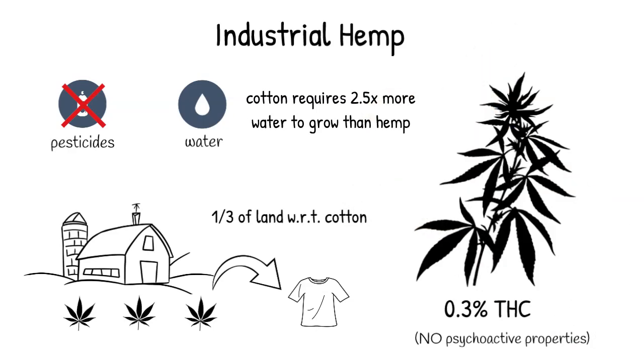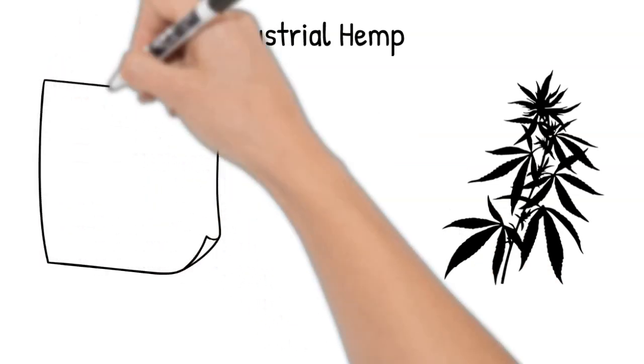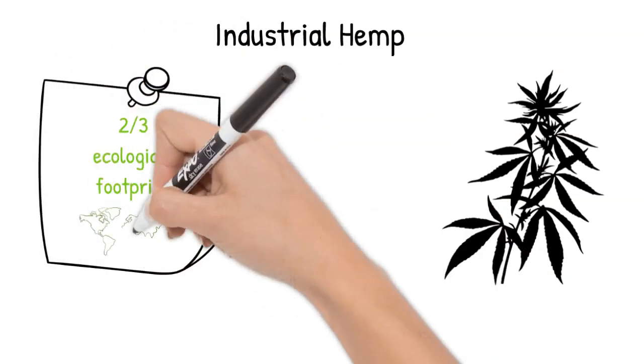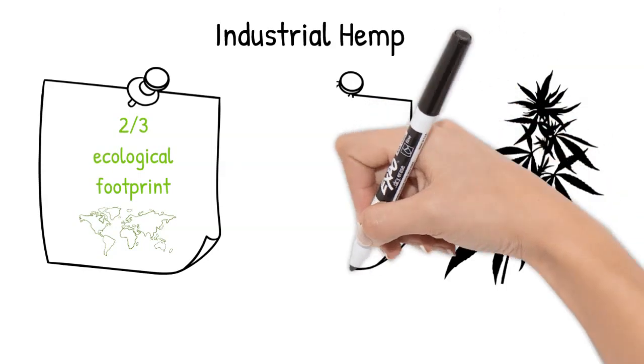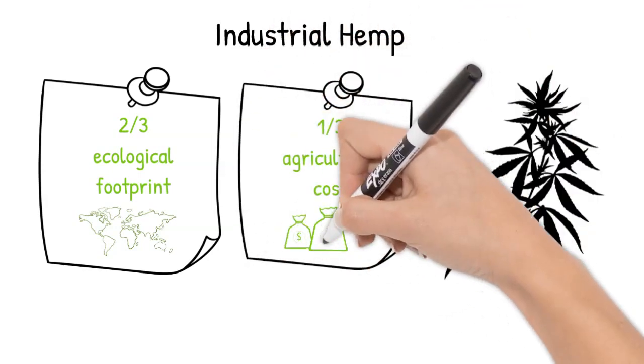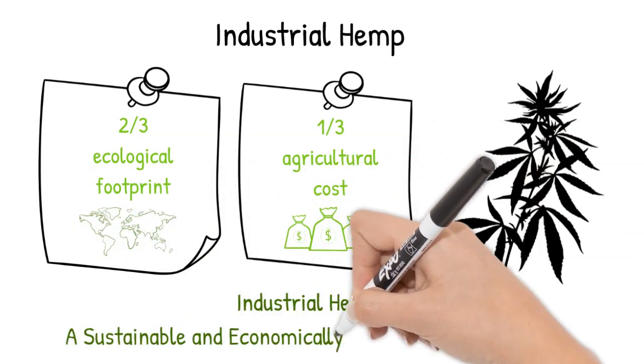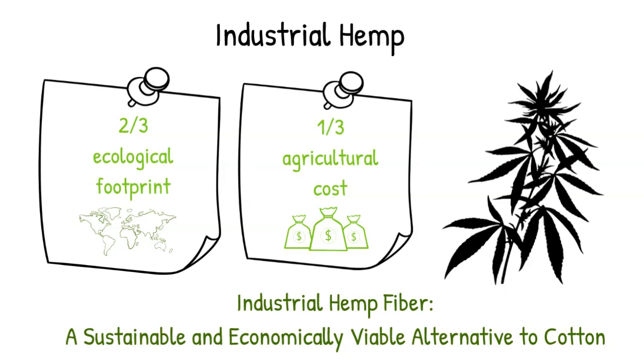Thus, lowering the amount of land usage. Our study finds that when compared to cotton, hemp only accounts for two-thirds of the ecological footprint and one-third of the agricultural costs. Therefore, we provide evidence that industrial hemp fiber is a sustainable and economically viable alternative to cotton.